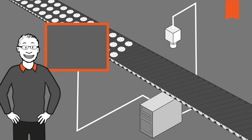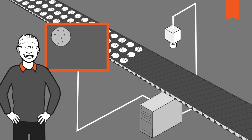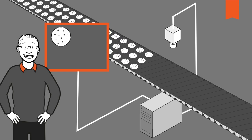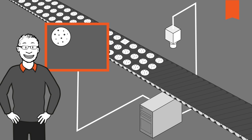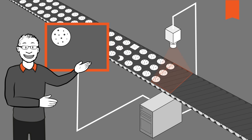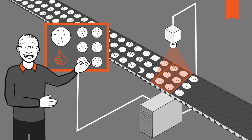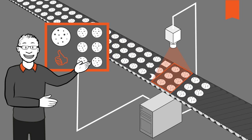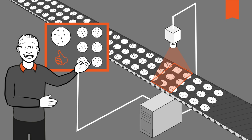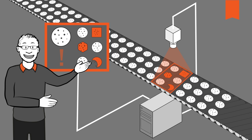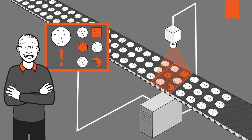Let's have a look at cookie inspection. Your template would be the image of a perfectly shaped cookie. A camera takes images of all cookies on the conveyor belt. As soon as there is a cookie that doesn't match the template, the cookie is rejected.